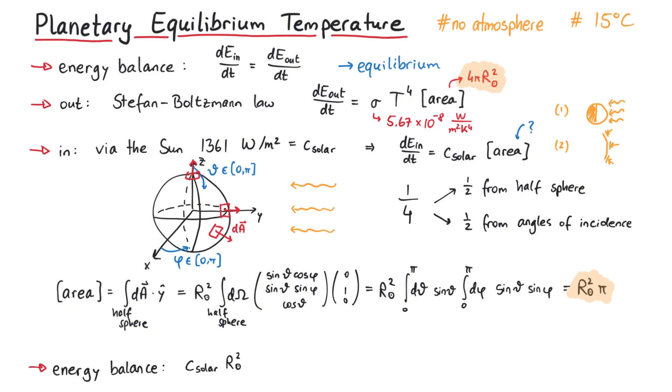By using our energy balance, we can get an expression for the temperature, which yields around plus 5 degrees Celsius. This is actually not that far off of our approximate global average temperature of 15 degrees Celsius, however, as expected, it is lower.